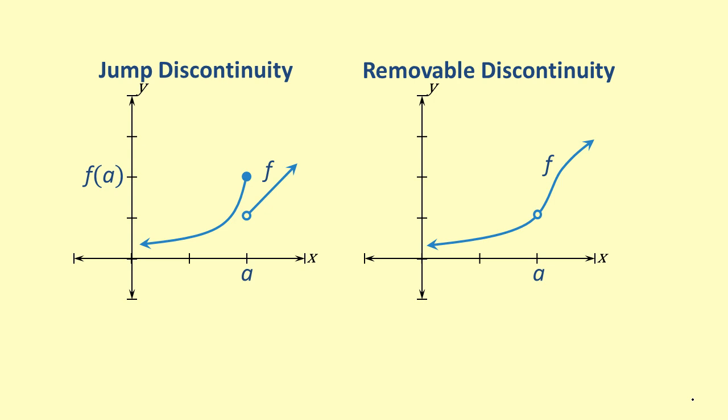Let's take a look at two of the main types of discontinuity: jump discontinuity and removable discontinuity. Jump discontinuities typically occur with piecewise functions. Notice in the graph that the value of the function as x approaches a from the left is not equal to the value of the function as x approaches a from the right.